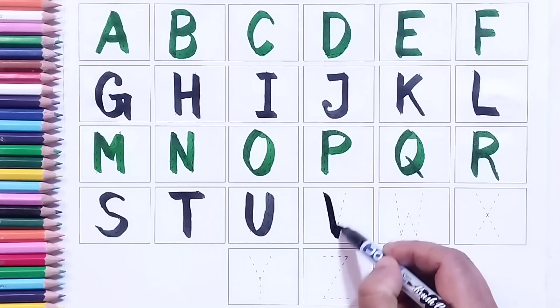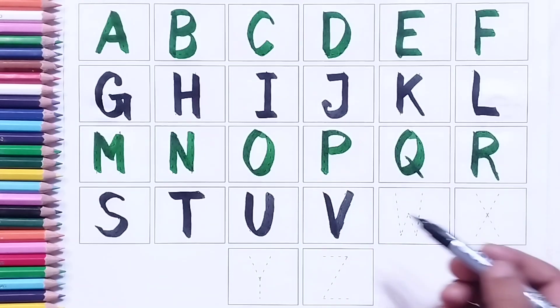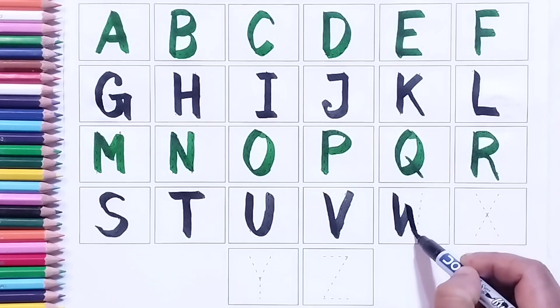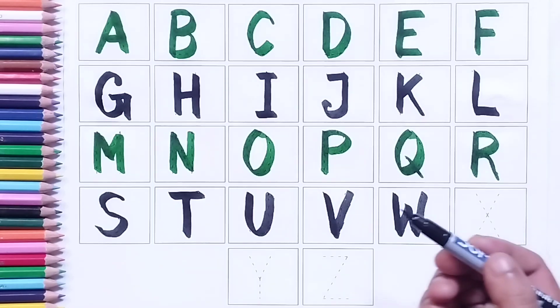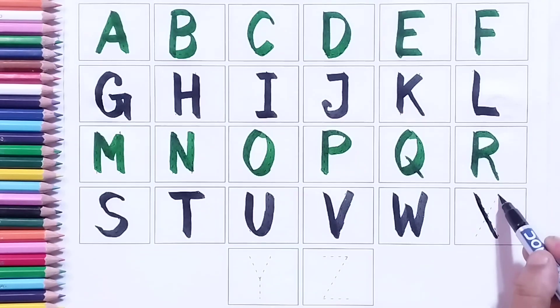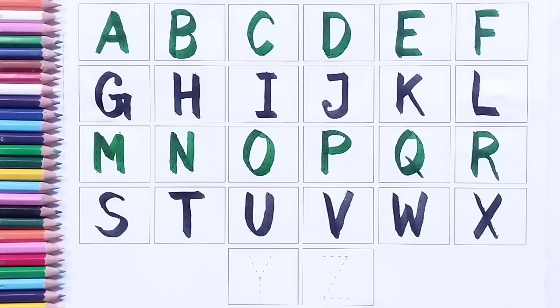V, V for van. Black color. W, W for watch. Black color. X, X for x-ray. Green color. Y, Y